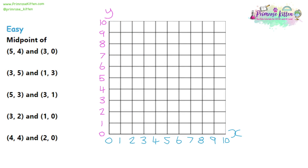We're going to be finding the midpoint of coordinates. With coordinates, the first number is the x value, corresponding to a number on the x-axis, which is labelled in blue, and the second number is the y-coordinate, which corresponds to a value on the y-axis, labelled in pink.